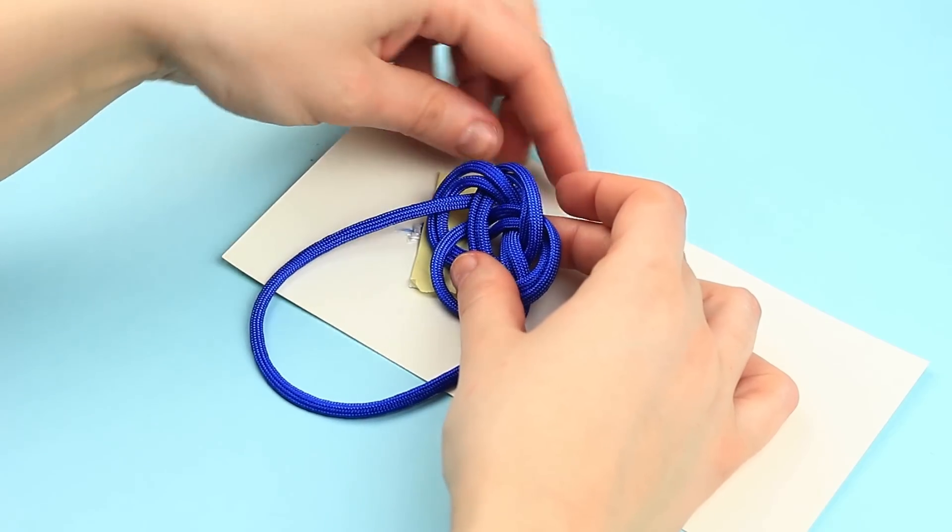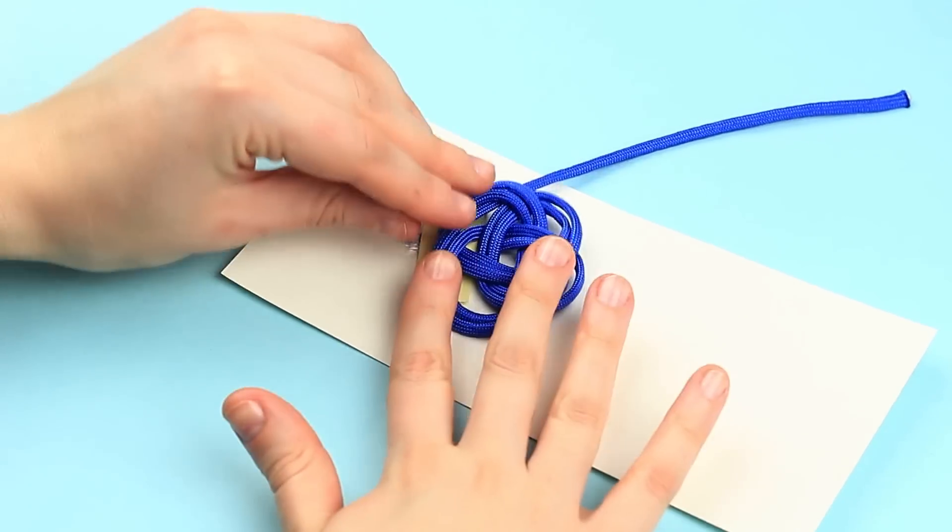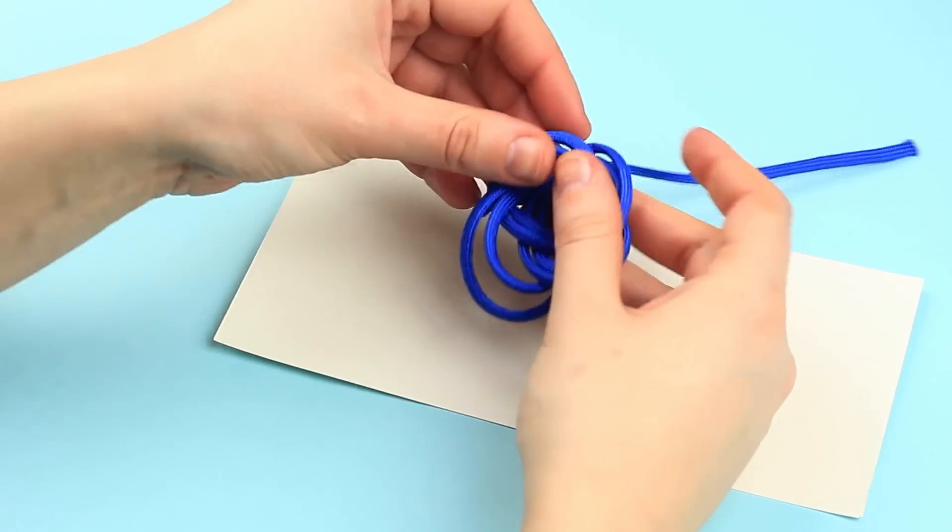Tuck the cord to the underside and remove the tape. Correct the shape by smoothing and pulling up on the cord.